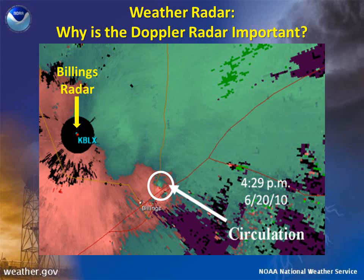So, why is the Doppler radar important? Well, without it, meteorologists would not be able to see what is going on inside a thunderstorm very well, nor would we be able to forecast the movement of a thunderstorm very precisely. Our warnings would be less accurate, putting more people and property at risk during hazardous weather.